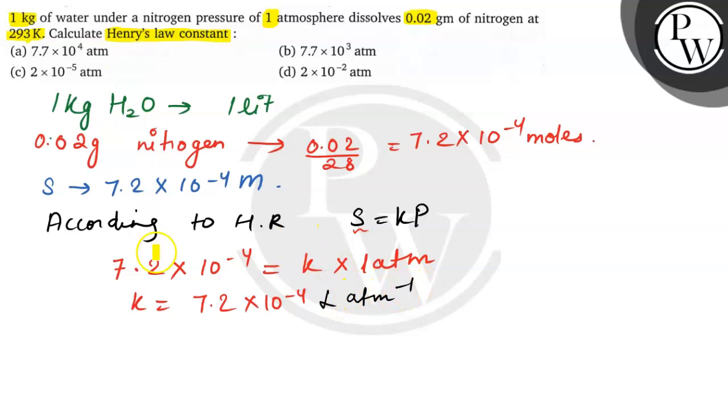Here I think there is a wrong option. Option A should be 7.2 × 10^-4 liter per atmosphere. So here we have a wrong option. The correct option is K equals 7.2 × 10^-4 liter per atmosphere. There is a printing mistake, so consider this as the correct option. I hope the concept is clear.